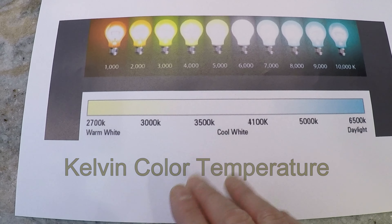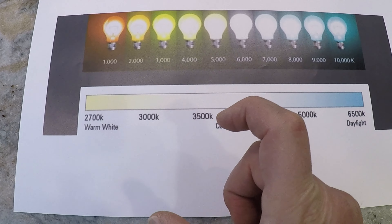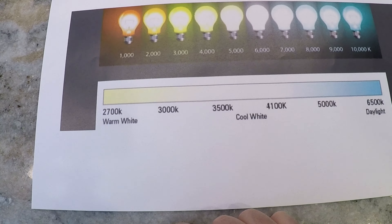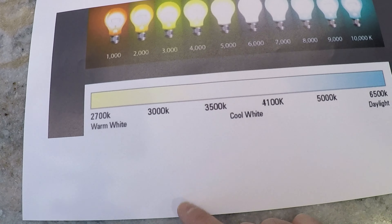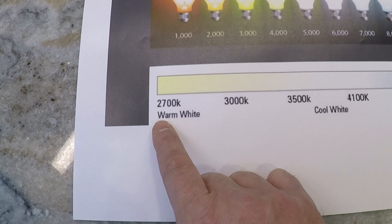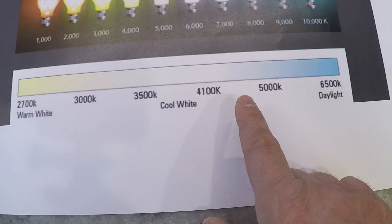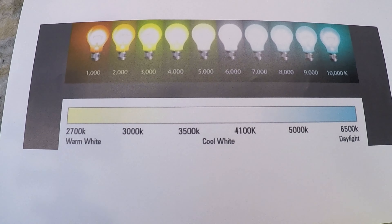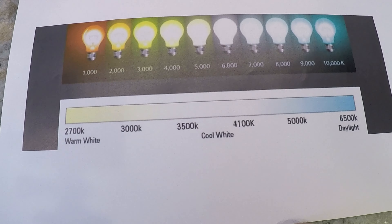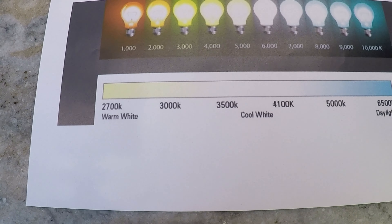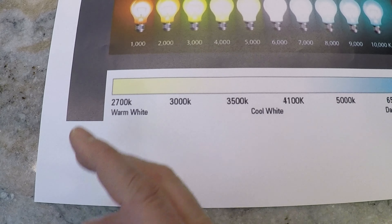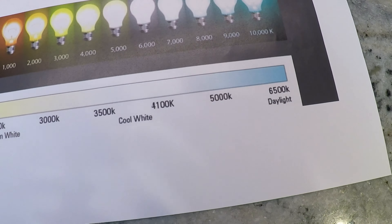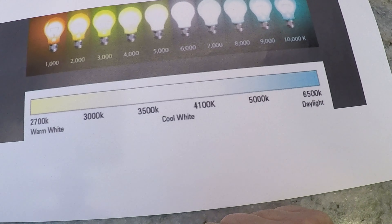Every light bulb you purchase has an indicator on the package that shows the Kelvin color temperature level. Usually anywhere from 2700 up to around 5000 is what you're going to see in your local home improvement store or online. The lower the number, the warmer or more yellow the light will be; and the higher the number, the colder or more blue the light will be.